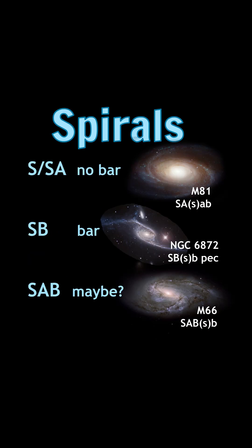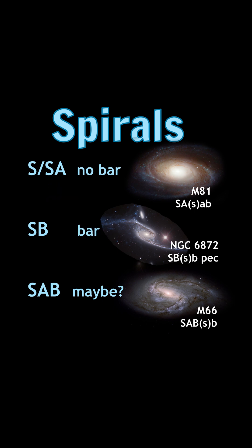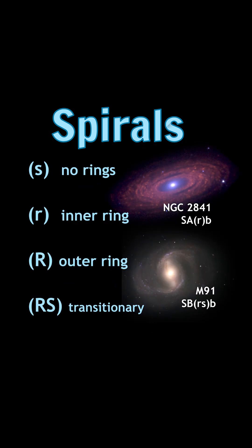Spirals are first classified based on whether they have a bar or not. If they don't, they're given a capital S or SA. If they do have a bar, they're given SB. And if it's unclear, then it's SAB.